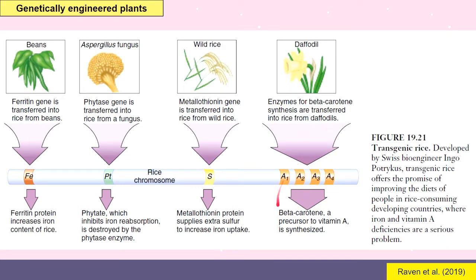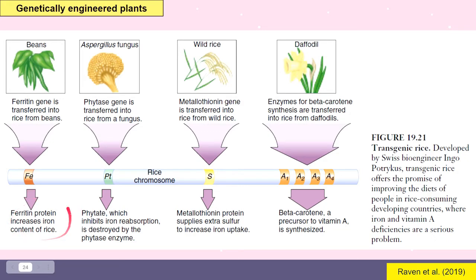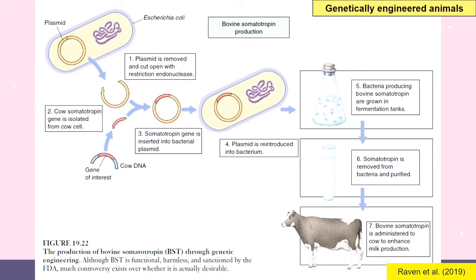Beta-carotene — a precursor to vitamin A — is synthesized within the rice chromosome of this transgenic rice. Whatever advantageous proteins are found in the rice can be ingested and taken advantage of by whoever eats it. Swiss bioengineer Ingo Potricus created transgenic rice allowing vitamin A and iron deficiencies to be lessened, particularly in developing countries.